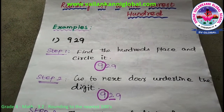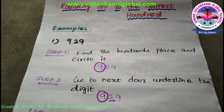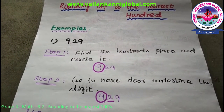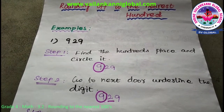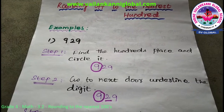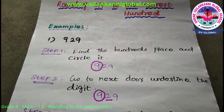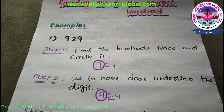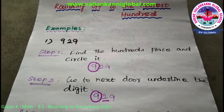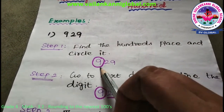The first one is a 3-digit number: 929. For Step 1, to find the answer we are going to use the rounding rule. Step 1 is to find the hundreds place and circle it. In 929, the 9 is in the hundreds place, so we circle that number.